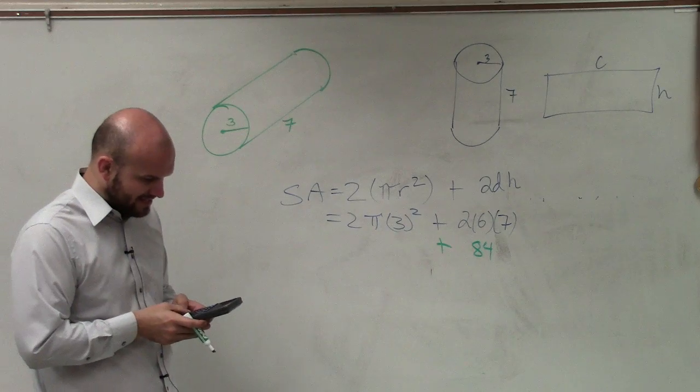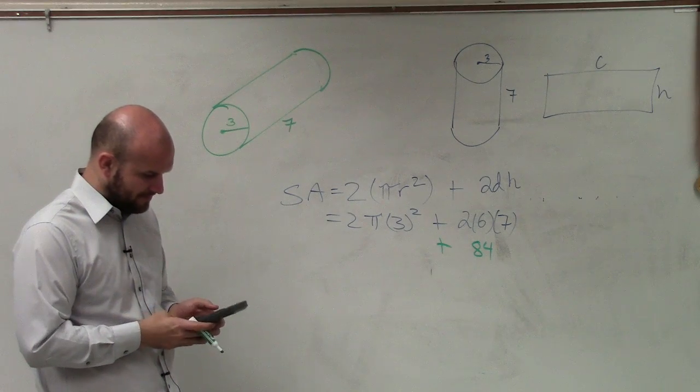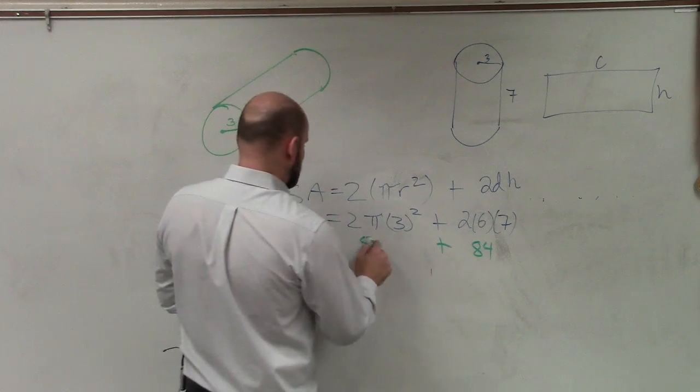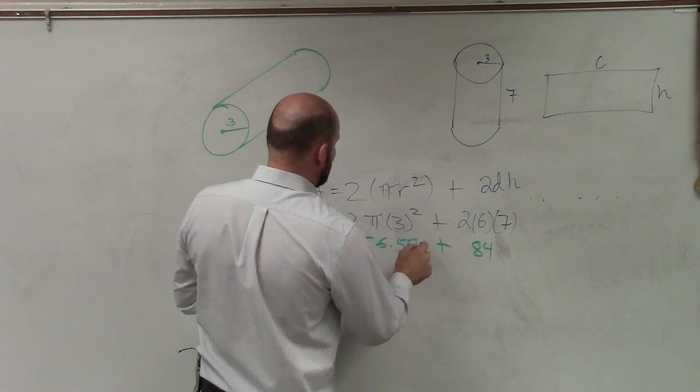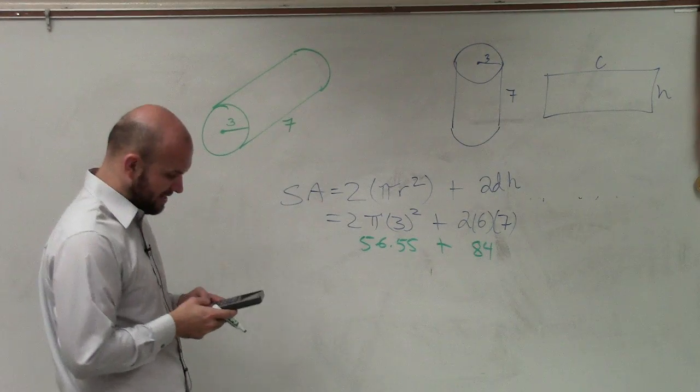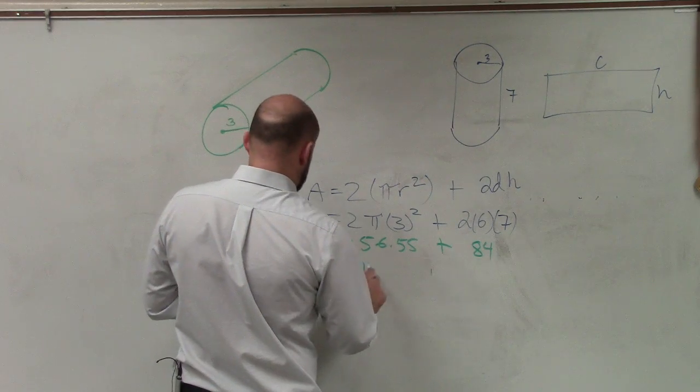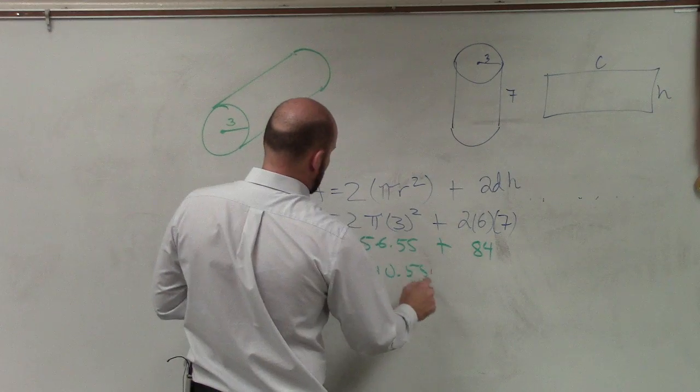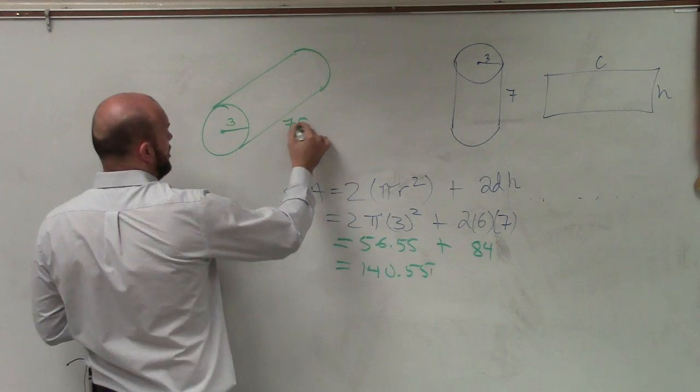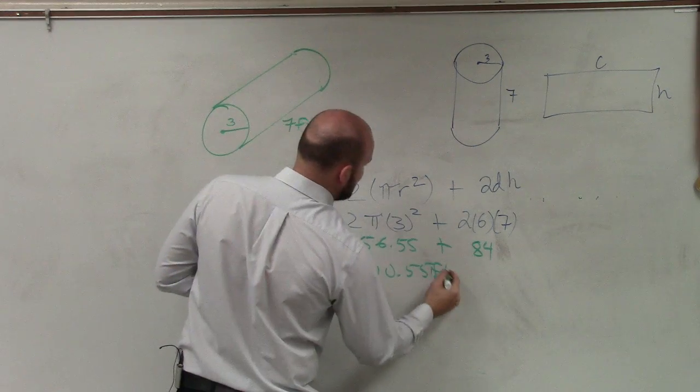Plus 9... 18, so 18 times pi is 56.55, if I round to the hundredth. And 56 plus 84, I don't want to add that in my head, is 140.55 is the surface area. Let's call this in feet, so therefore, it'll be feet squared.